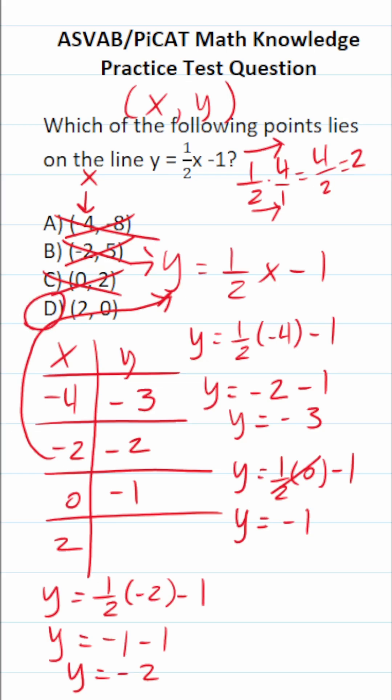By process of elimination, we know D is correct. That said, let's go ahead and plug it in. This says y equals one-half times 2 minus 1. Y equals one-half times 2 is simply 1 minus 1. 1 minus 1 is 0. So 2, 0, as you can see, is in fact a point on this line.